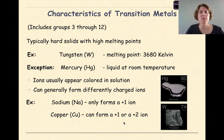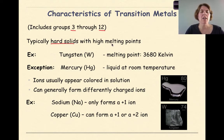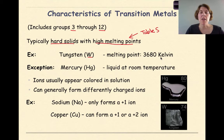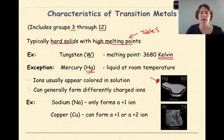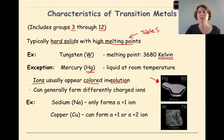Now let's talk about the transition metals, which are in the middle of the periodic table, groups 3 through 12. They are typically hard solids with high melting points — for example, tungsten (W) has a melting point of 3,680 Kelvin, one of the highest on the periodic table. The exception here is mercury, which is a liquid at room temperature. The ions of transition metals appear colored in solutions — blues, yellows, and reds.